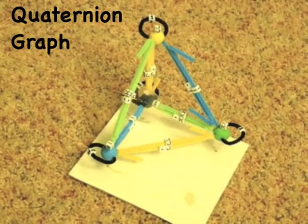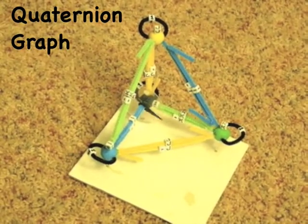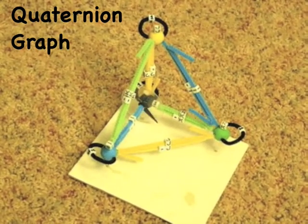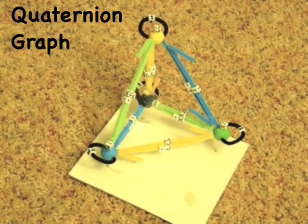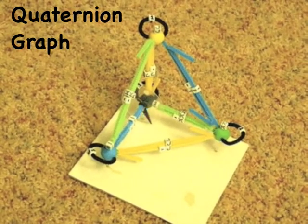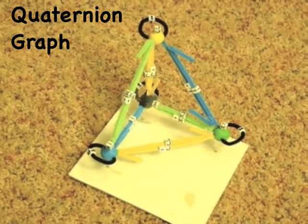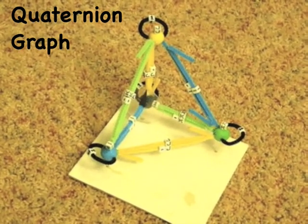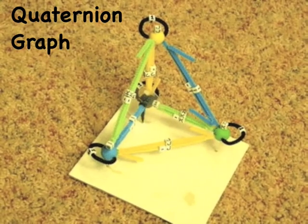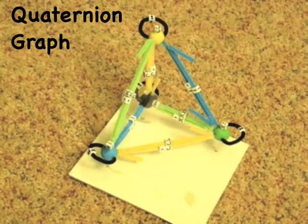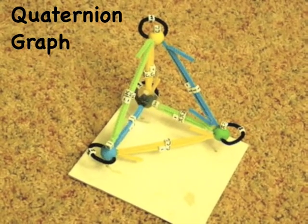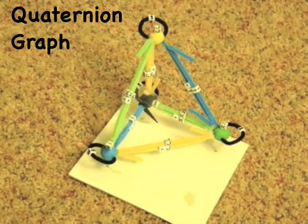The quaternions continue the theme started with the complex numbers. The real number 1 with its loop is already there. There are now three imaginary vertices with directional edges connecting them all. Real numbers provide loops for all vertices. There are four undirectional edges inside of loops, and 12 directional edges.